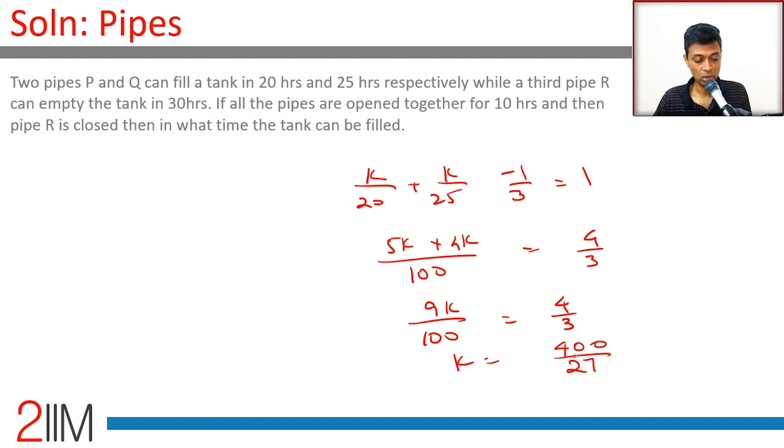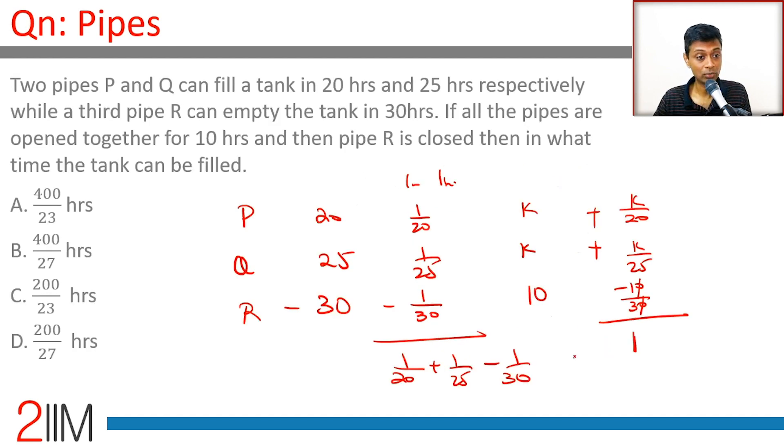400/27 hours. The question is asking for how long the tank takes to get filled totally, that is 400/27 hours, not for the remaining hours after pipe R has been closed. So the answer is 400/27 hours.